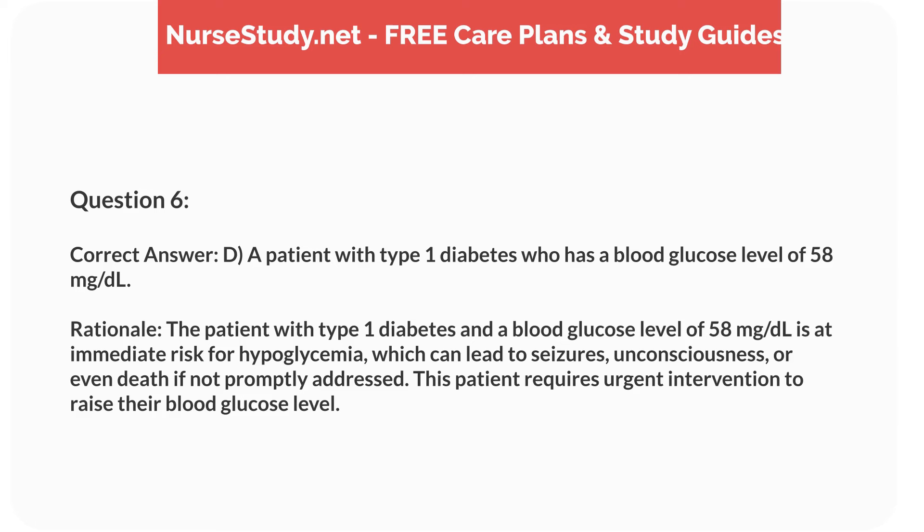Correct answer: D. A patient with type 1 diabetes who has a blood glucose level of 58 mg per deciliter. Rationale: The patient with type 1 diabetes and a blood glucose level of 58 mg per deciliter is at immediate risk for hypoglycemia, which can lead to seizures, unconsciousness, or even death if not promptly addressed. This patient requires urgent intervention to raise their blood glucose level.